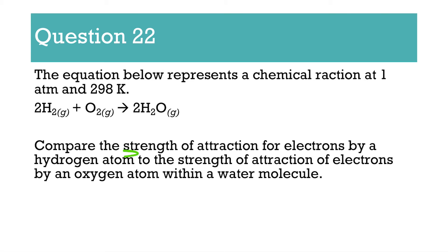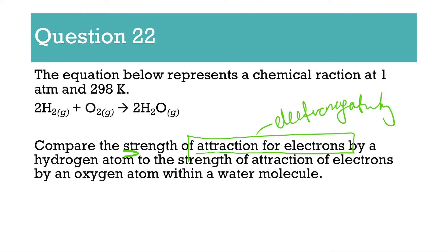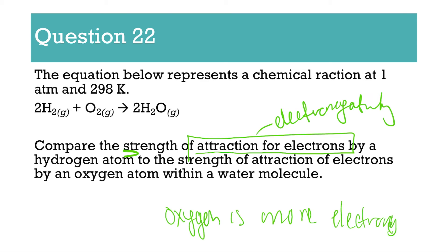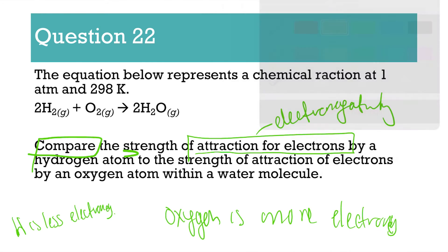Number 22: it gives a bunch of info asking you to compare the strength of attraction for electrons by hydrogen to the strength of attraction by an oxygen atom within the water molecule. This definition is the definition of electronegativity. The question is basically asking, which is more electronegative — oxygen or hydrogen? All you have to say is oxygen is more electronegative. Or you could say hydrogen is less electronegative — that is fine too. If you used the term 'attraction for electrons' instead of electronegativity, that is also fine.